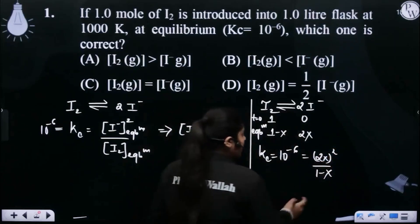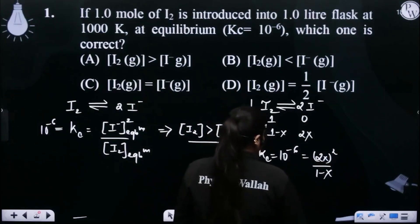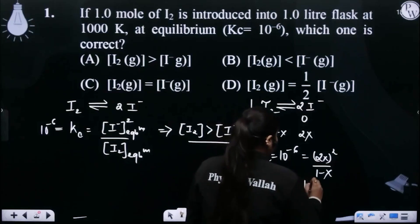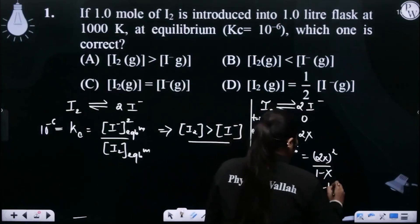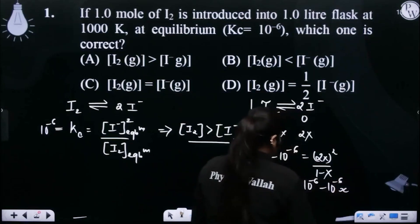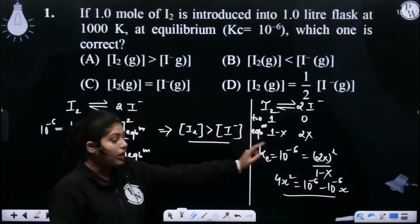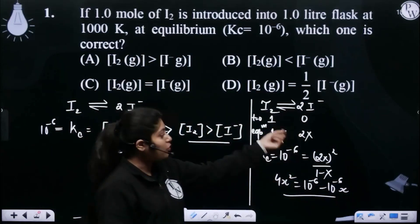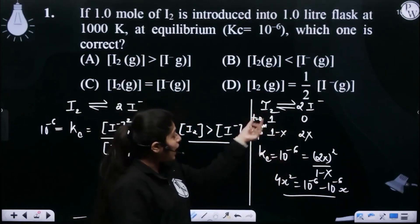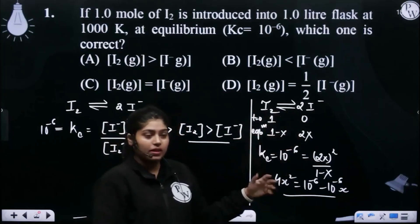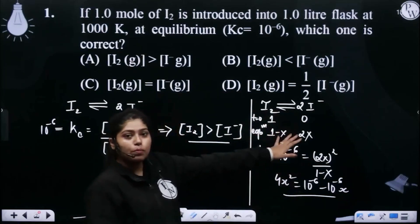So what will be the quadratic? 4x squared is equal to 10 to the power minus 6 into 1 minus x. Now further, to solve this quadratic we will solve it. Now when we solve it, we will know that I2 is more in comparison to I minus. Okay? Solving the quadratic, we can prove it.